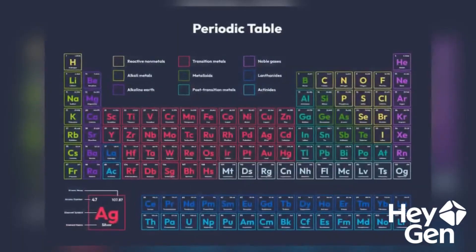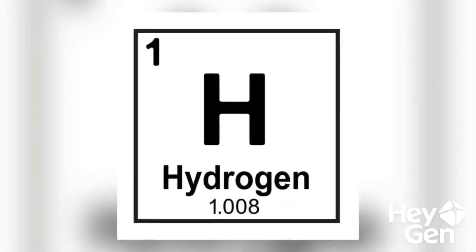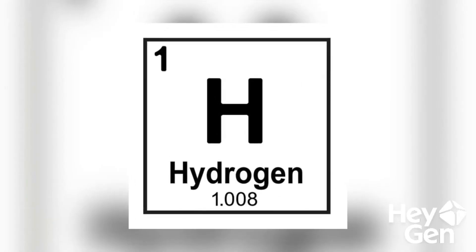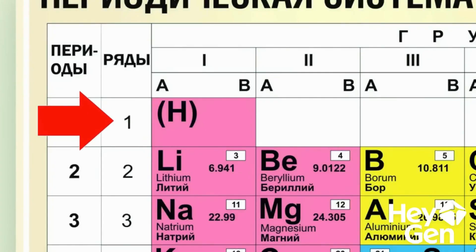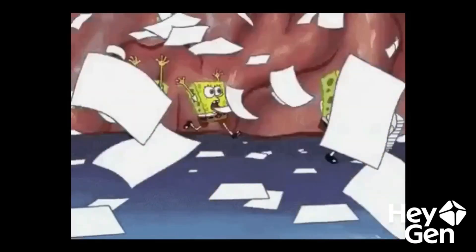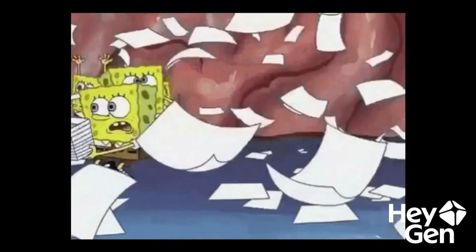The first element in the periodic table is hydrogen, and you all know this perfectly well. But what if I ask you: which element, or what in general, should be placed in the periodic table before hydrogen? When you try to answer this question, real confusion begins. Let's try using scientific knowledge and competent approaches to sort out this question and find some clues to this problem.